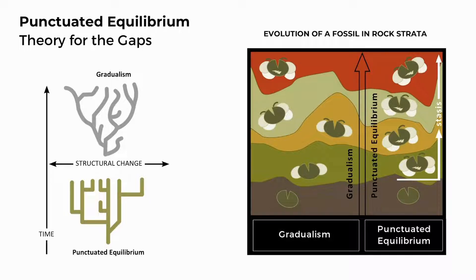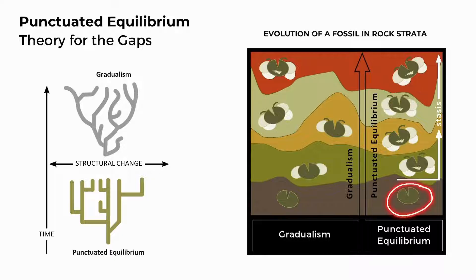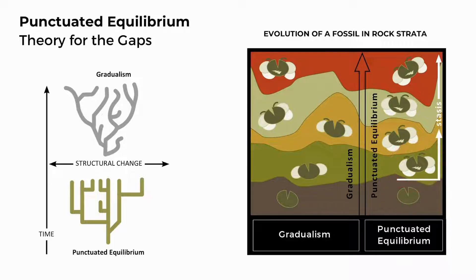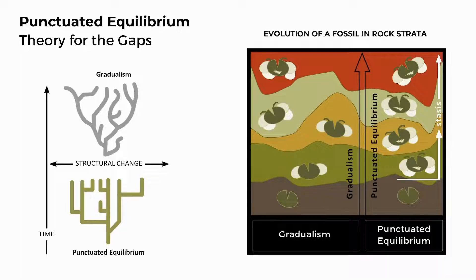Gould and Eldridge's punctuated equilibrium model, however, shows rapid changes to form new species and then no change for long periods of time. So, rapid changes from a simple organism lead to the sudden appearance of a fully formed species, followed by long periods of stasis or equilibrium with no changes across many rock layers or strata.